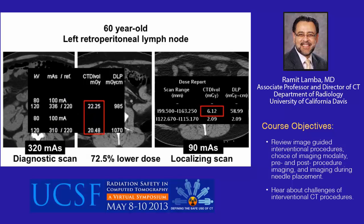In the same patient, a diagnostic CT urogram had been performed. The unenhanced and combined nephrographic and excretory phase images were acquired at an mAs of 320. We obtained a localizing scan at about a 72% decreased radiation dose — an mAs of 90 — which was adequate for visualization of the lymph node adjacent to the aorta. The CTDIvol dropped from approximately 22 on the diagnostic scan to 6 on the localizing scan.